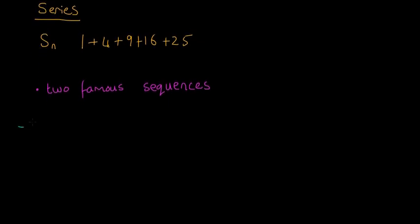Two famous sequences. The first one is called the Fibonacci sequence. The sequence goes 1, 1, 2, 3, 5, 8, 13, 21, and then it keeps going.